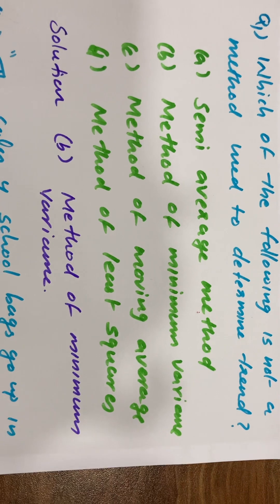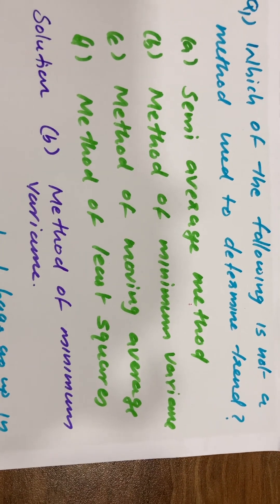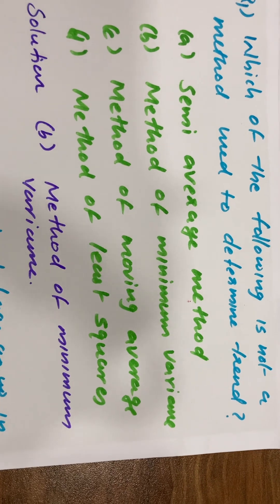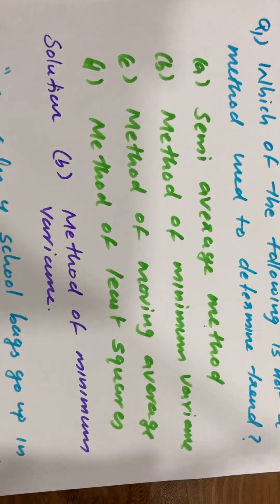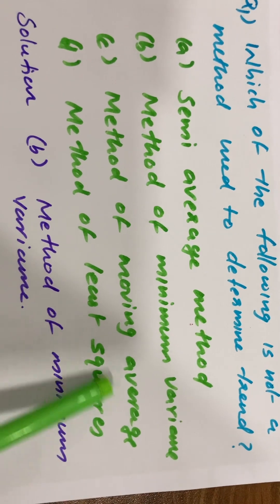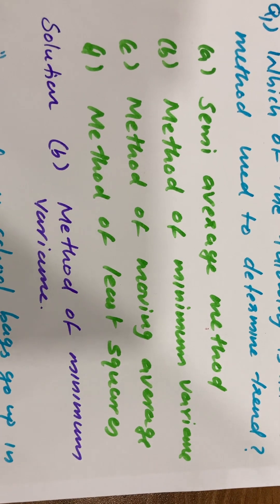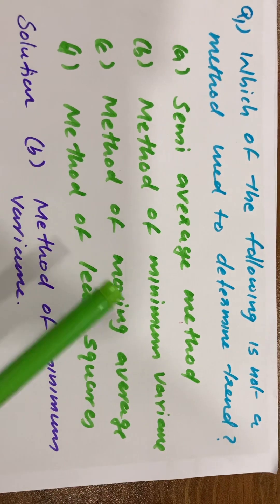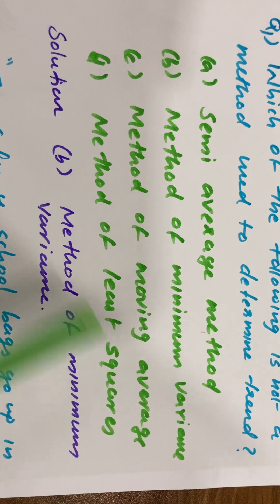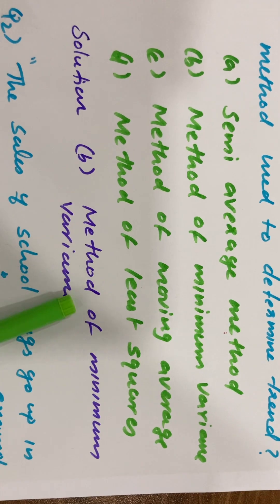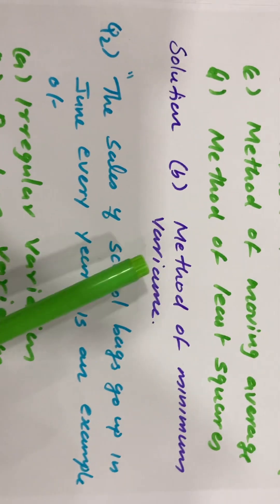Which of the following is not a method used to determine trend? The semi-average method, the moving average method, and the least square method are used to determine the trend. The minimum variance method is not a method used to determine the trend.